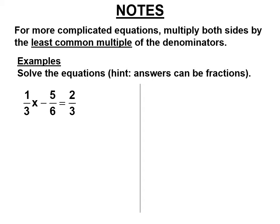Now we have different denominators — some 3s and 6s. We've got to figure out a number to multiply both sides by so we can cancel both the 6 and the 3. Earlier you learned how to add 1/6 to 2/3. They have different denominators, so you had to find a common denominator. What denominator would you use? Hopefully you would use 6, because that's the least common denominator.